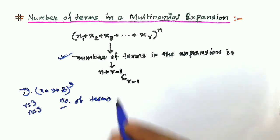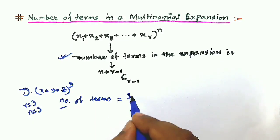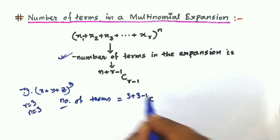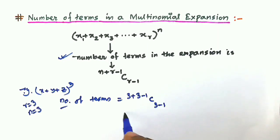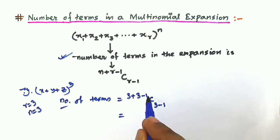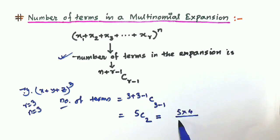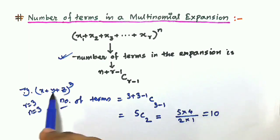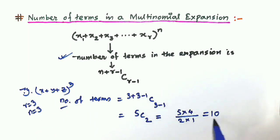So the number of terms will be n+r-1 C r-1, that is 3+3-1 C 3-1, which gives us 5 C 2. Now 5C2 equals 5×4 divided by 2×1, which is 10. So the number of terms in the expansion of (x+y+z)³ is 10.